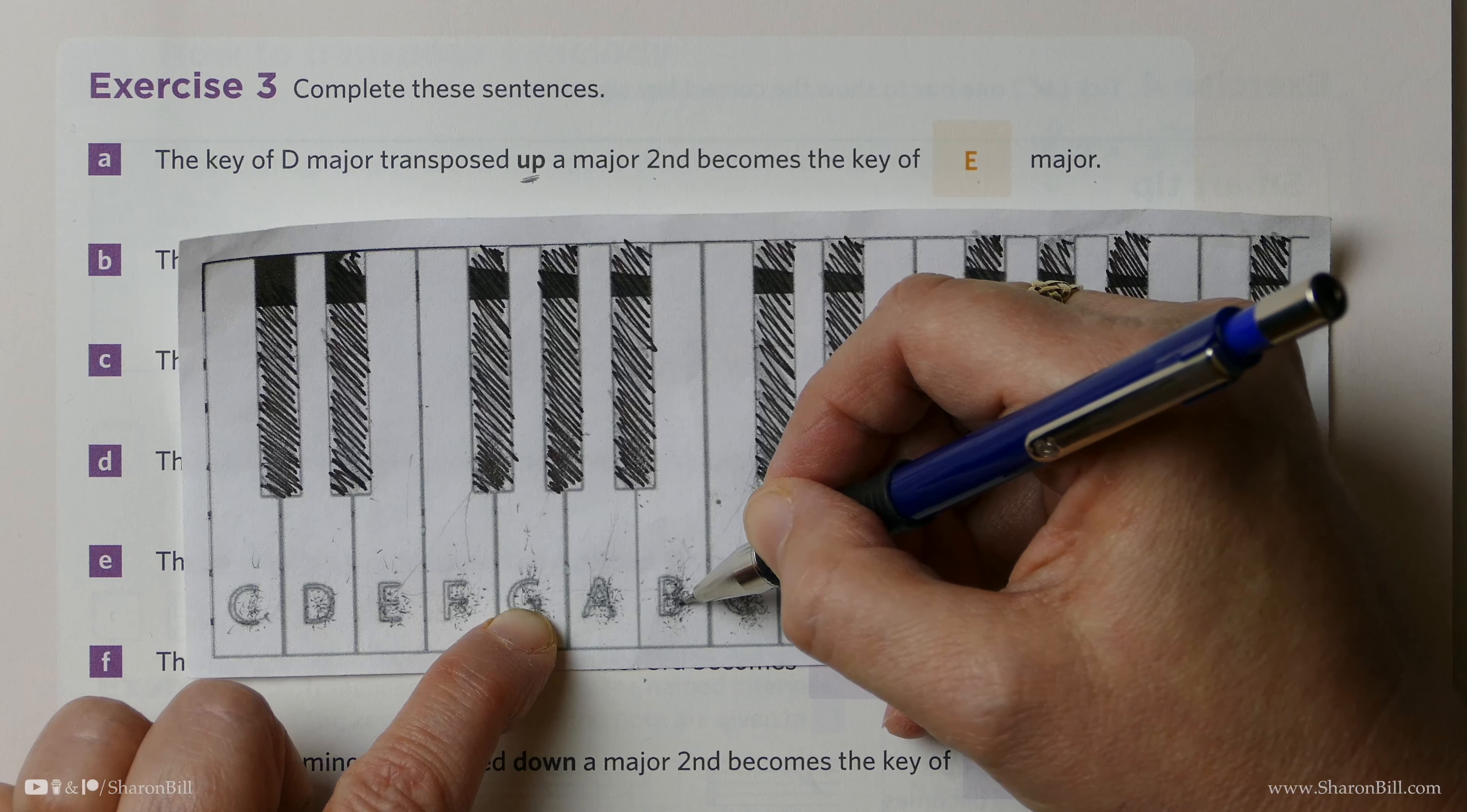We have the key of G minor to begin with, and we need to go down a perfect 5th. Just be careful, you keep going in the correct direction. There's so much to think about, it's easy to get confused, I know. So G down a perfect 5th. G, counting back, 1, 2, 3, 4, 5. And C to G is a perfect 5th, so going down a perfect 5th takes us to C, so we're now in the key of C minor.